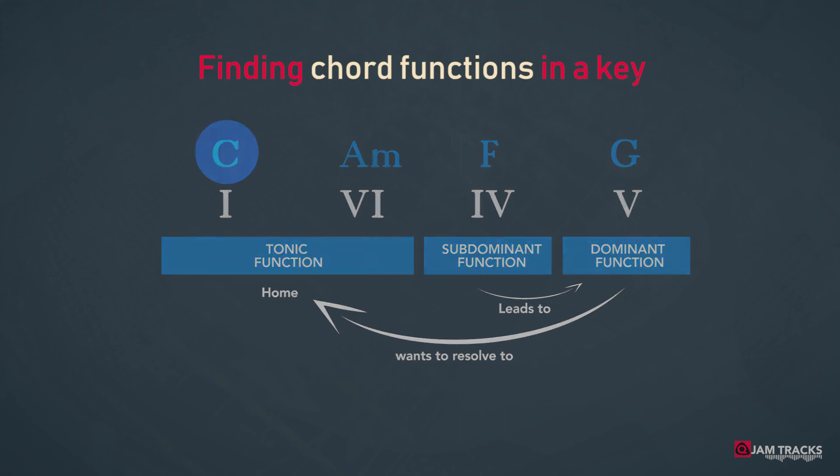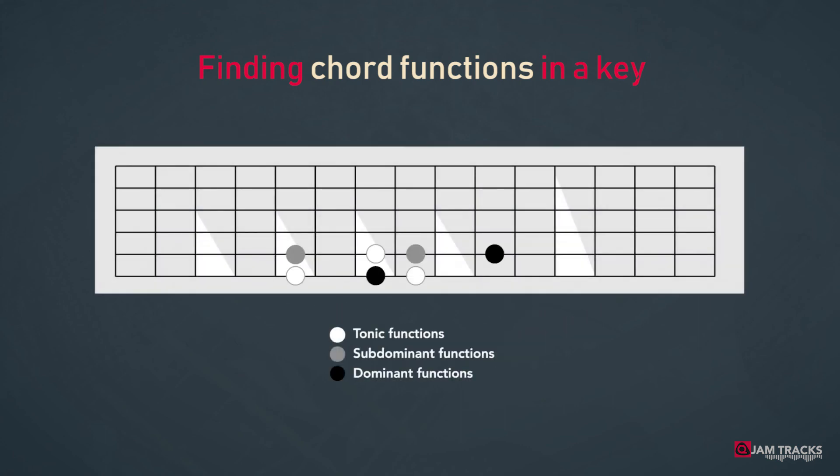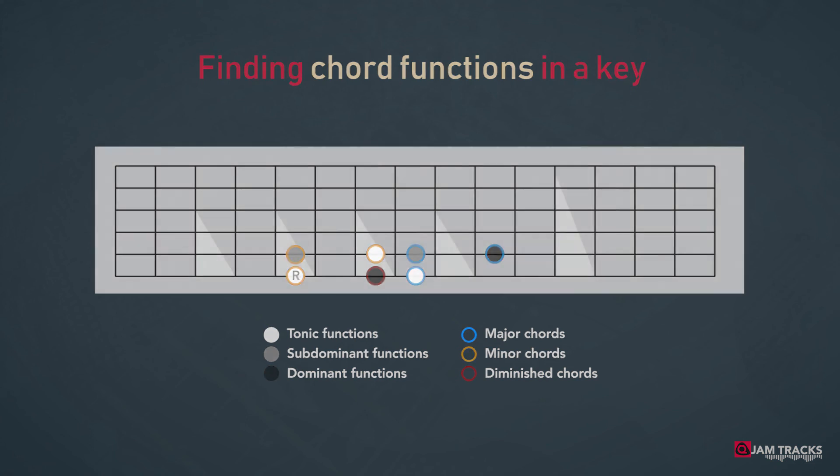In our visual system we could mark the different functions so we could see which function each chord has. By adding color-coded rings we can also see if the chord is major, minor or diminished. And for the minor keys it's the same system only we have to relocate the root. Easy as that. Now we can choose the chords in our system based on its harmonic function and therefore we can quickly create sensible chord progressions.